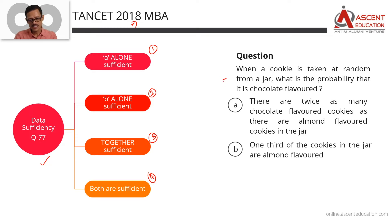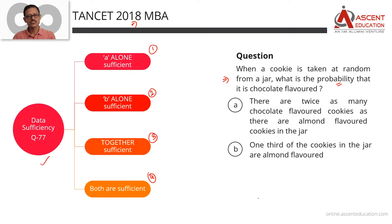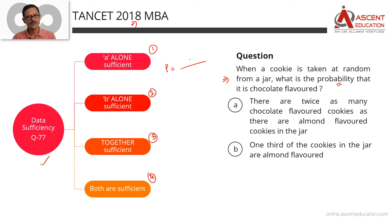Question: When a cookie is taken at random from a jar, what is the probability that it is a chocolate-flavored cookie? If you have a probability, we need a denominator and we need a numerator. In this case, the denominator is the total number of cookies in the jar.